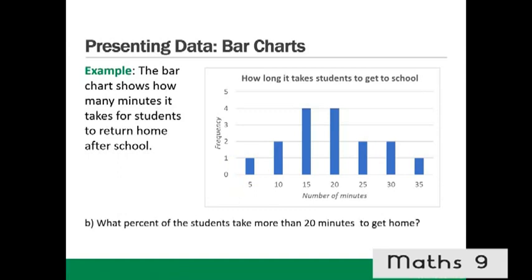What percent of the students take more than 20 minutes to get home? We look at the graph — there are 2 here, 2 here, and 1 here, so that's 5 altogether. The percentage is 5 out of 16 (the total number of students) times 100, which is 31.25%.